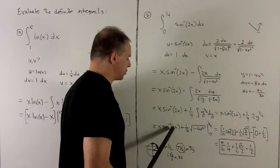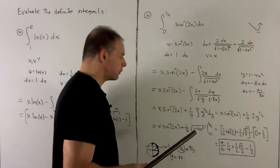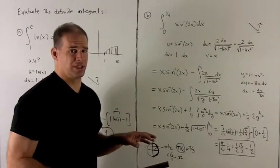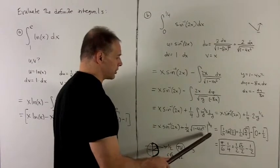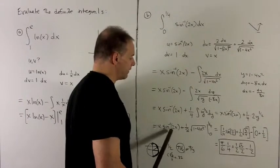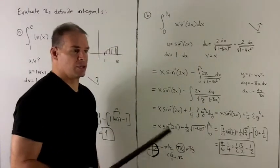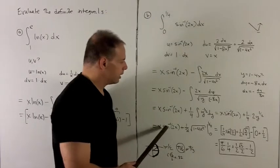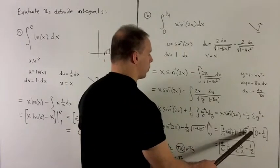So the full expression is x sine inverse 2x plus 1/2 radical 1 minus 4x squared, evaluated from 0 to 1/4. We have to be careful with zeros — if you have a polynomial with no constant term, 0 in gives 0 out, but always check. Putting 0 in: it doesn't matter what sine inverse of 0 is because the x out front is 0. Sine inverse of 0 is 0 since sine of 0 equals 0, so the first term is 0. Putting 0 into the radical leaves square root of 1, giving just 1/2. Make sure you use parentheses or you'll miss the minus sign.